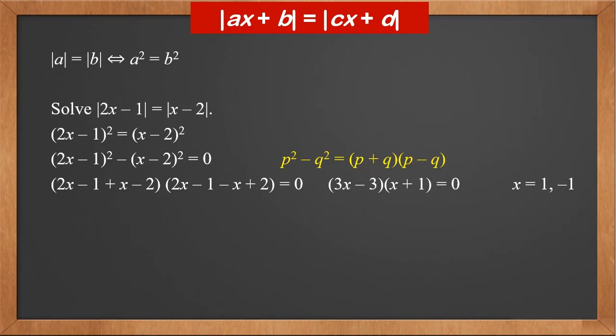This simplifies to three x plus three times x plus one equals zero. Therefore, x is either one or minus one.